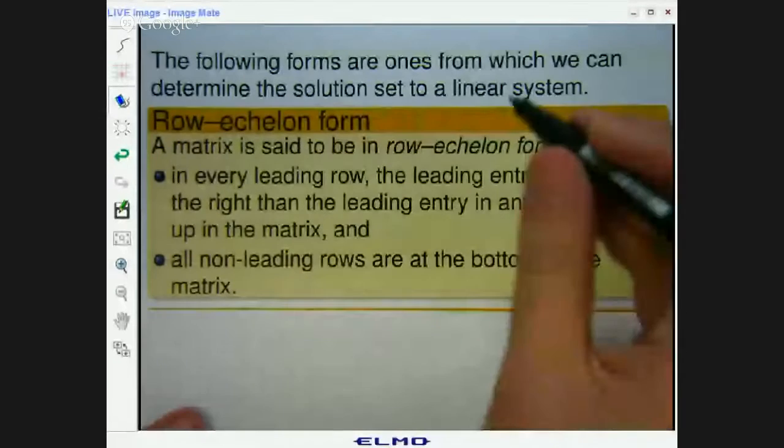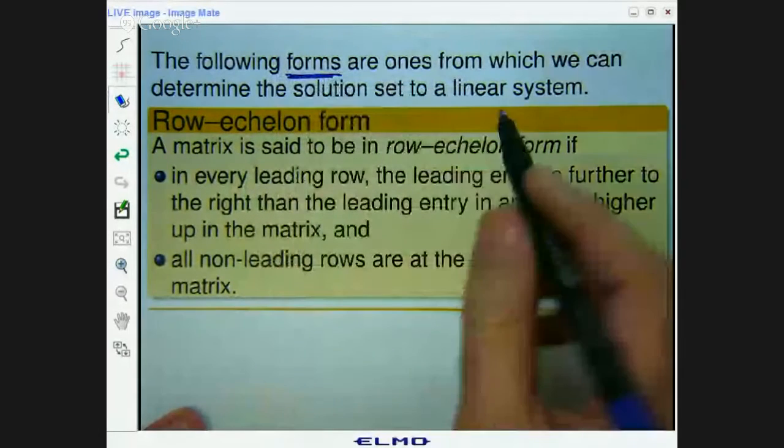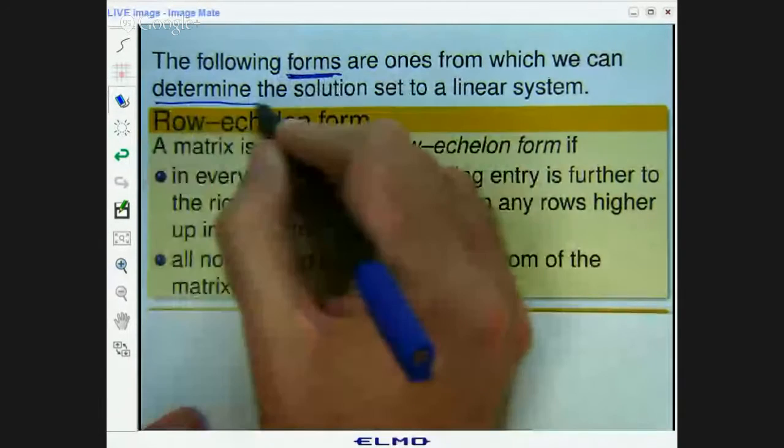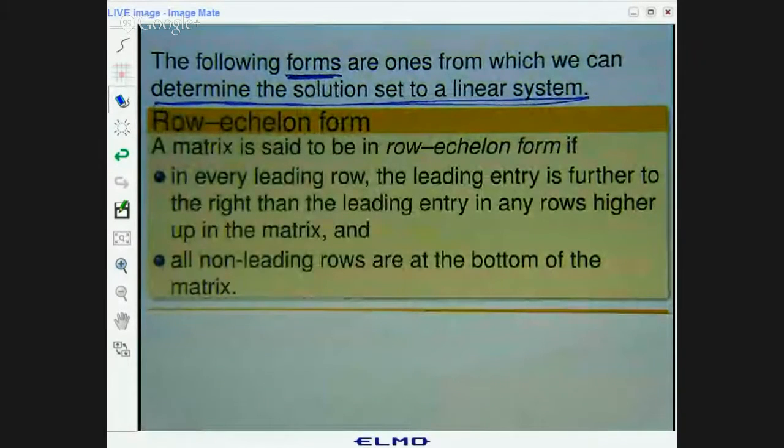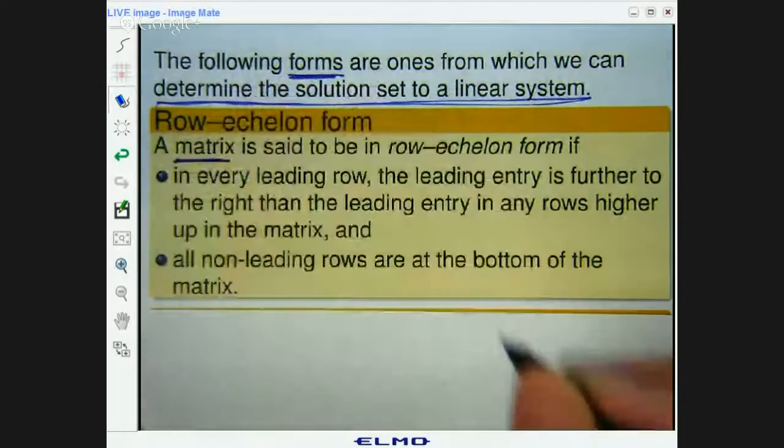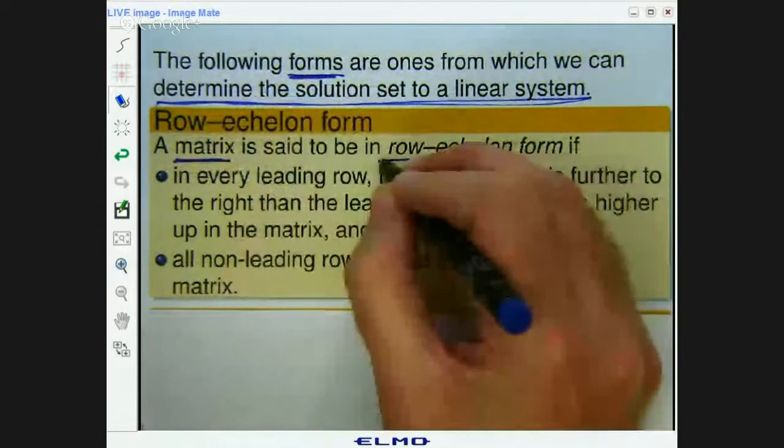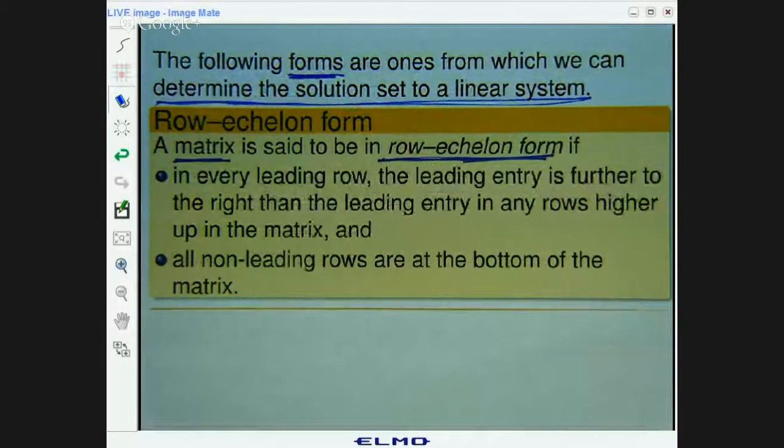Alright, so firstly, a quick definition. The motivation is the following form called a row echelon form is one from which we can determine the solution to a linear system. Okay, so suppose I've got a matrix A.